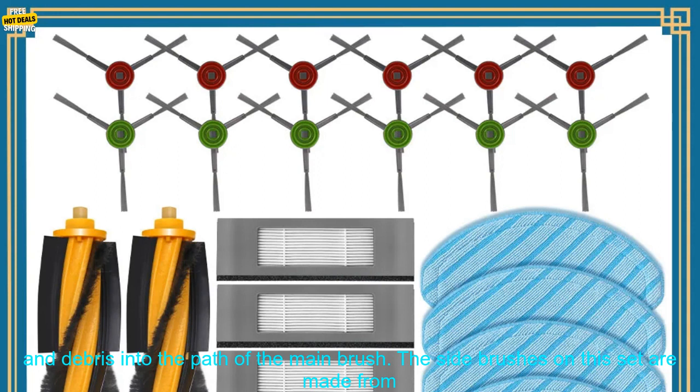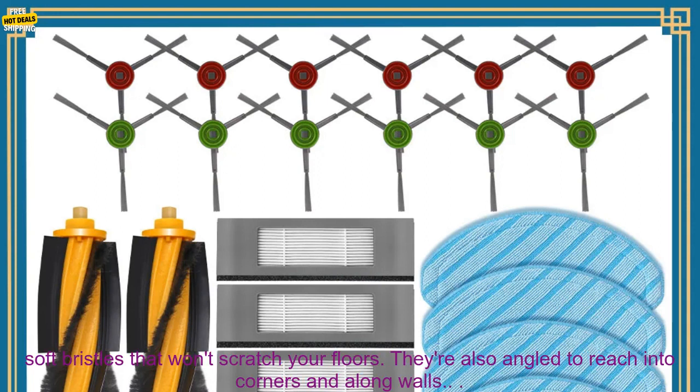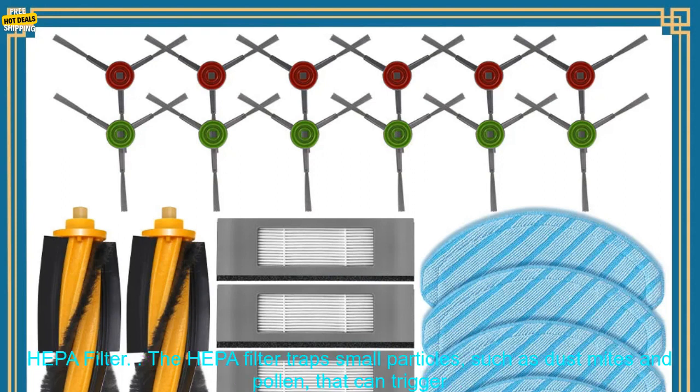Side Brushes. The side brushes help to sweep dirt and debris into the path of the main brush. The side brushes on this set are made from soft bristles that won't scratch your floors. They're also angled to reach into corners and along walls.